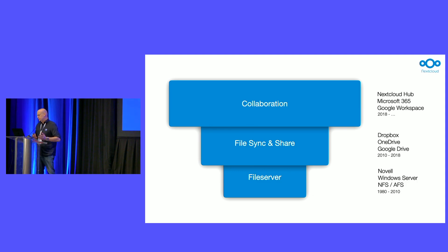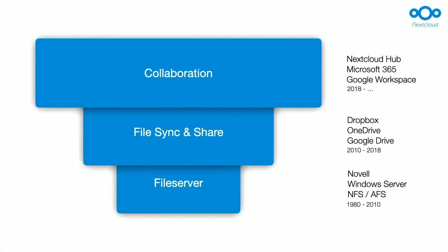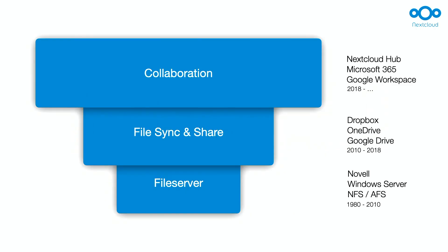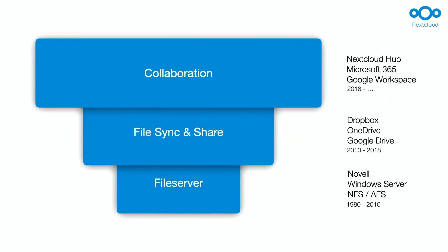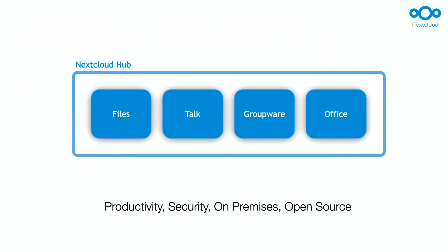Then came file sync and share — software you know from Dropbox, Google Drive, OneDrive, and so on — which has mobile access, web interfaces, encryption, versioning, and so on. But at the end of the day, what we all want and use is collaboration software: software that can be used to work together between organizations, teams, and people over the internet. The major players here are obviously Microsoft 365, Google Workspace, and what we call NextCloud Hub.